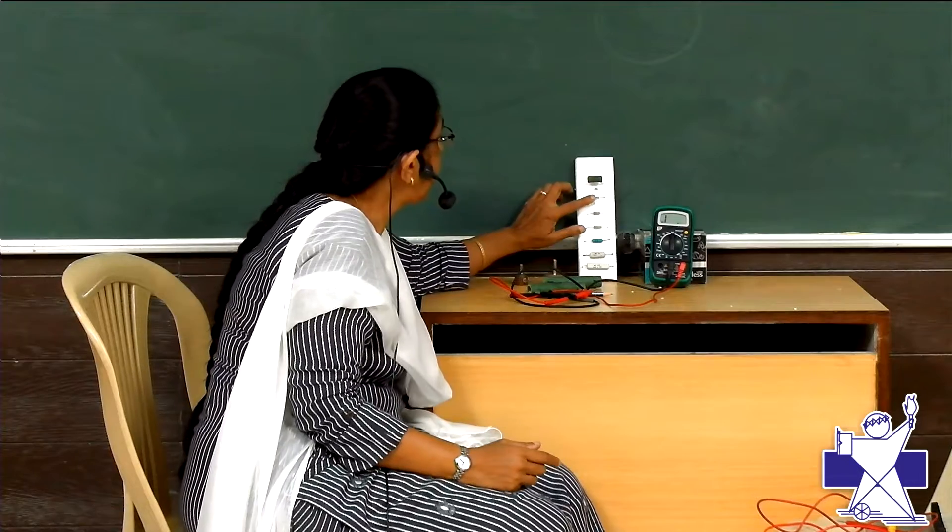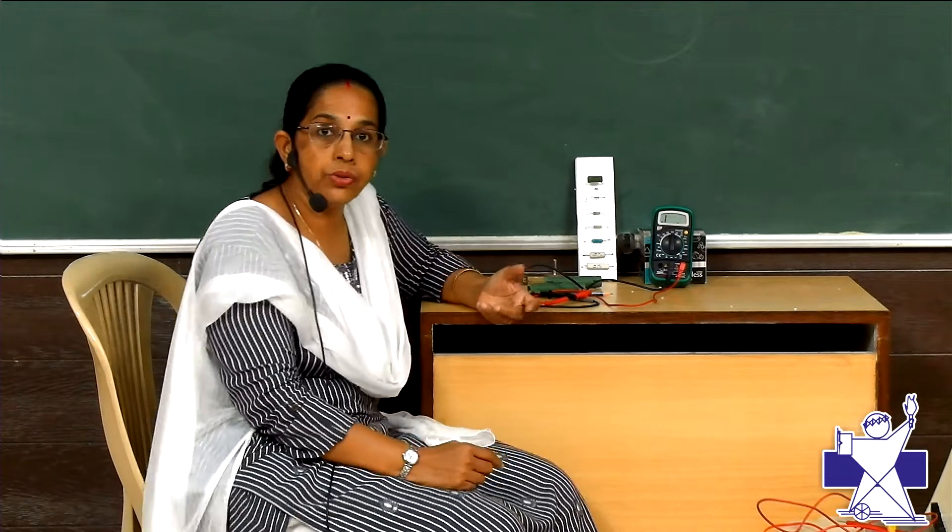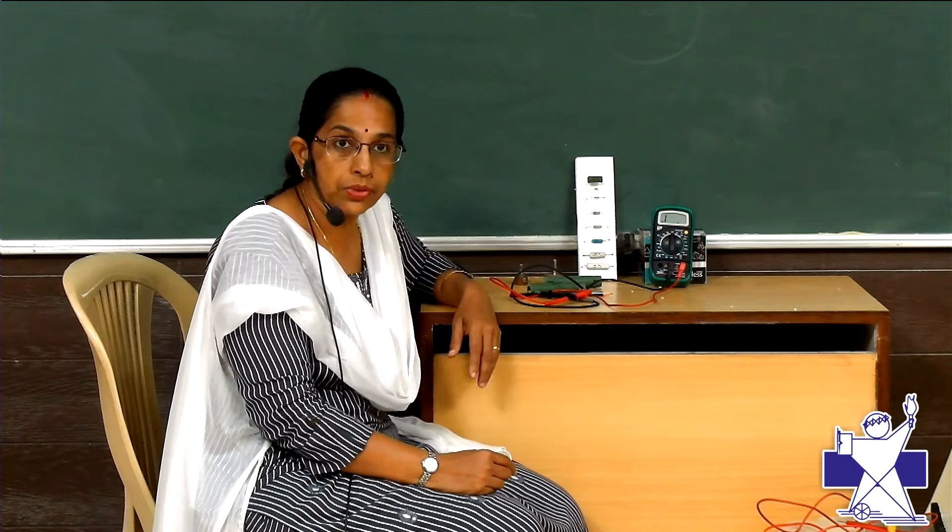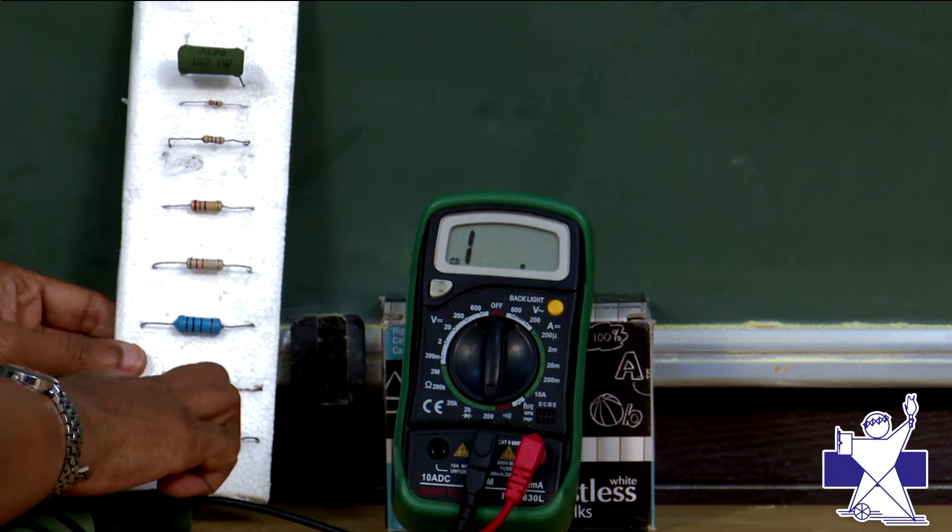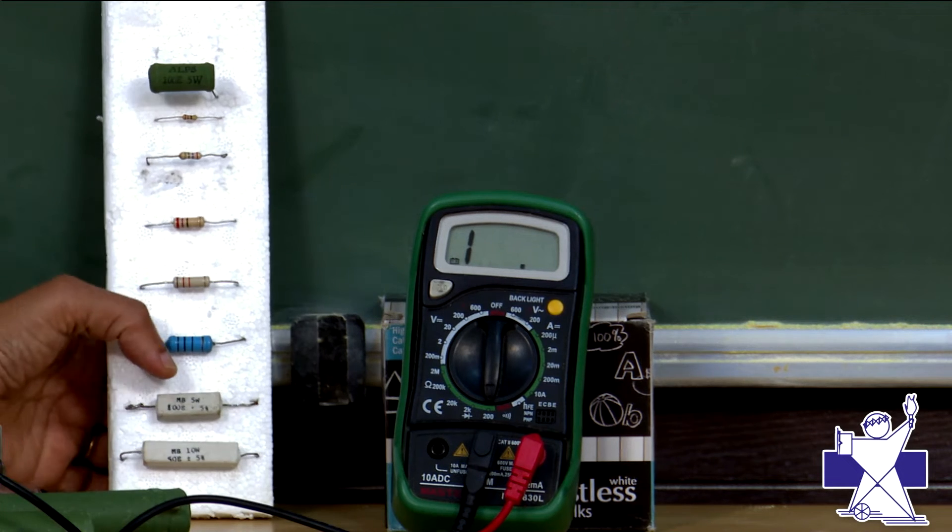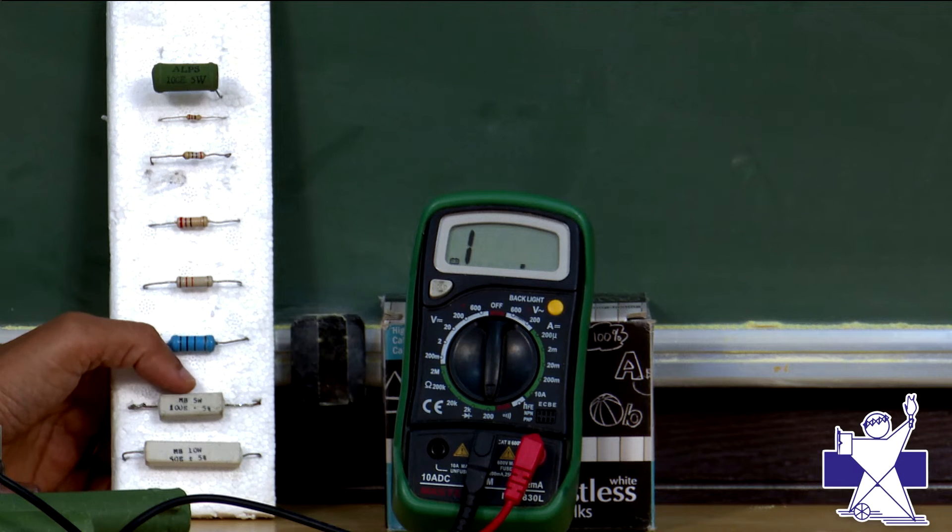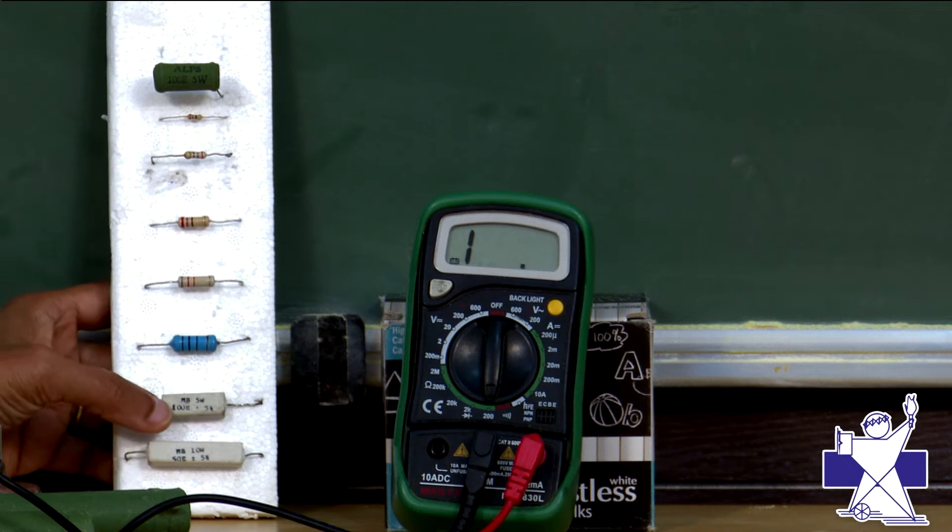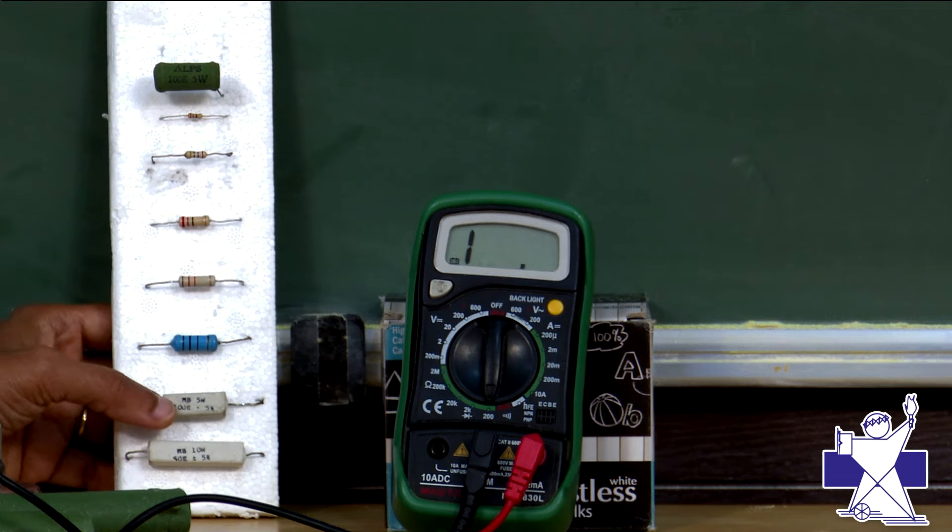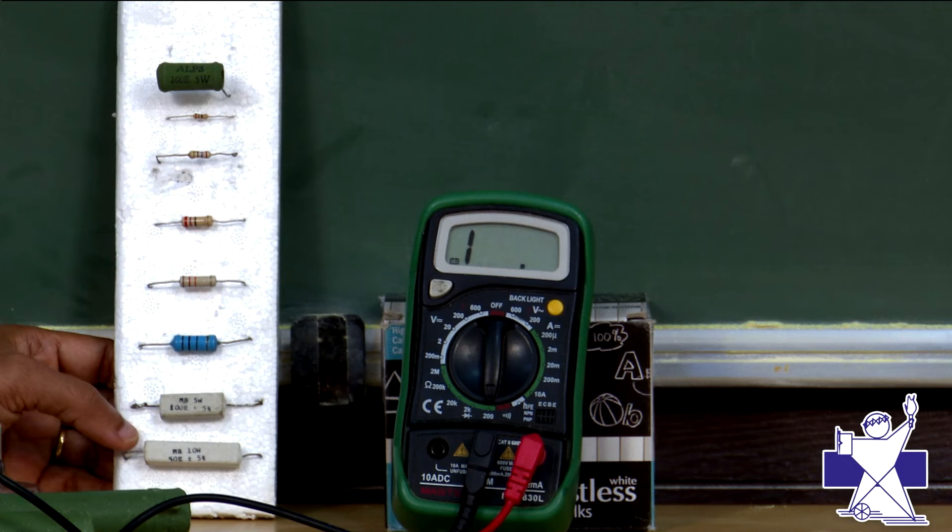When you have carbon resistors, then you can measure the value by seeing the color code. But, when we have ceramic resistors. Here it is written over this. See, it is written 5W. That means it has 5 wattage and 100E. That means it is of 100 ohms plus minus 5 percent. The tolerance is 5 percent.